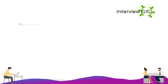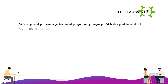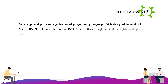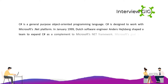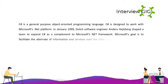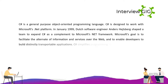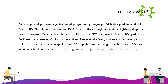C# is a general-purpose, object-oriented programming language designed to work with Microsoft's .NET platform. In January 1999, Dutch software engineer Anders Hejlsberg shaped a team to develop C# as a complement to Microsoft's .NET framework. Microsoft's goal was to facilitate the exchange of information and services over the web, and to enable developers to build highly portable applications.